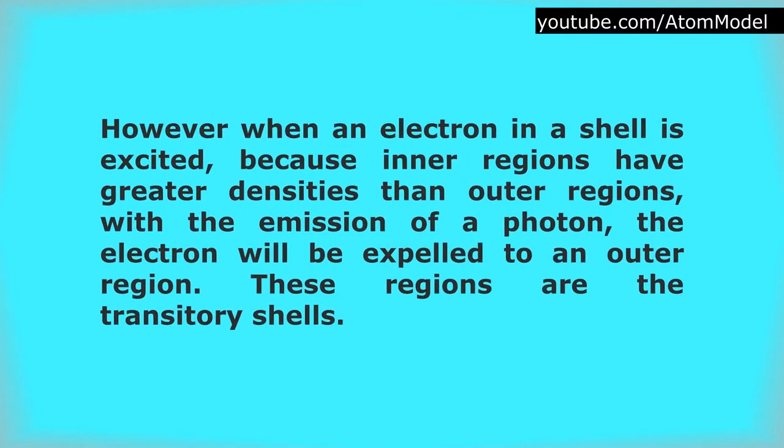However, when an electron in a shell is excited, because inner regions have greater densities than outer regions, with the emission of a photon, the electron will be expelled to an outer region. These regions are the transitorial shells.